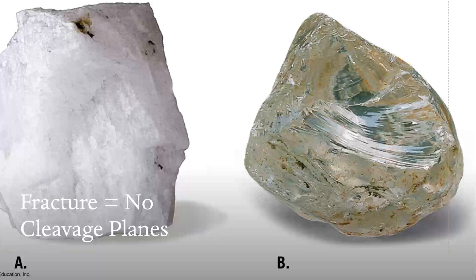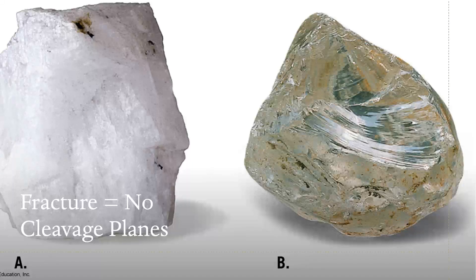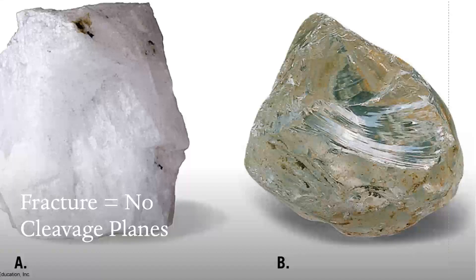But not all minerals have weaker bonds. Quartz, for example, is just silicon tetrahedra over and over again, and all of those bonds are of equal strength. So how does that break? Not particularly geometrically — it fractures. Any mineral that doesn't have cleavage planes is said to fracture. And those are the mineral properties that determine the shape and strength of a mineral.